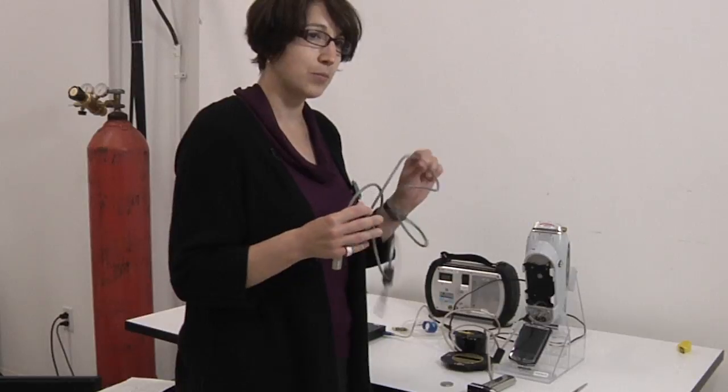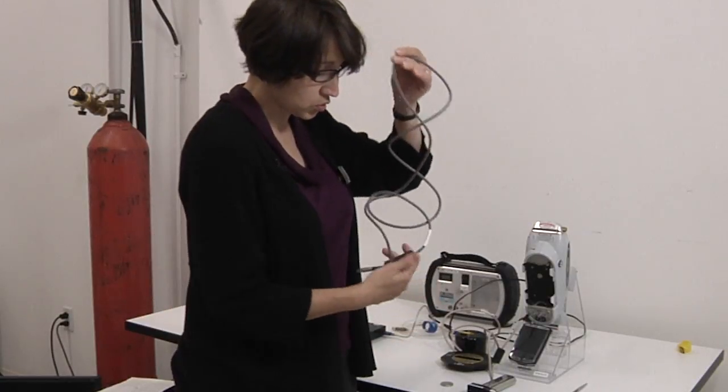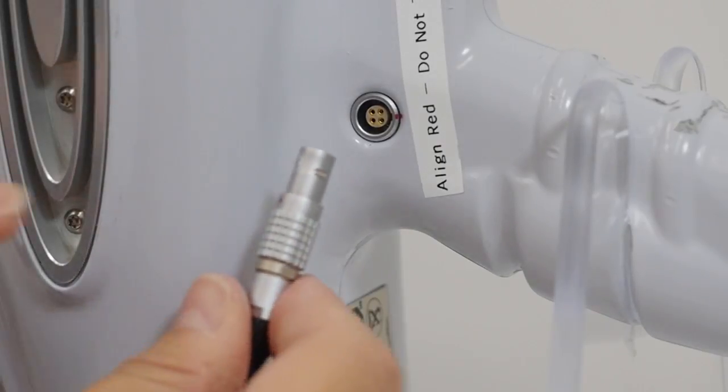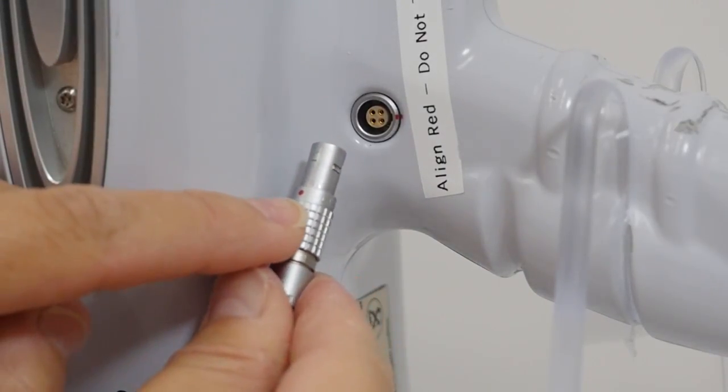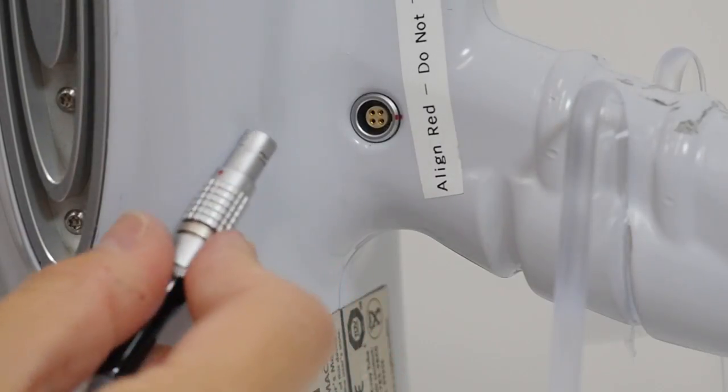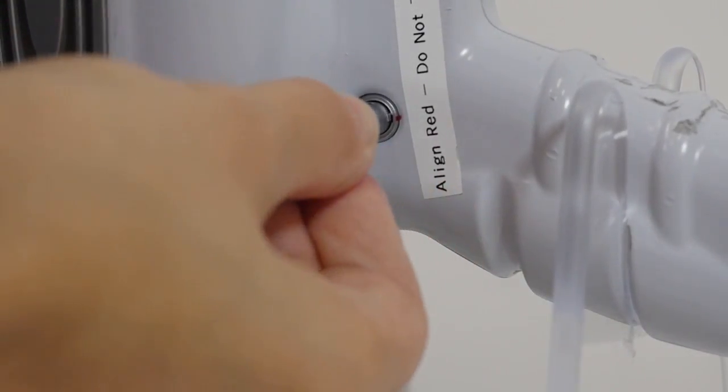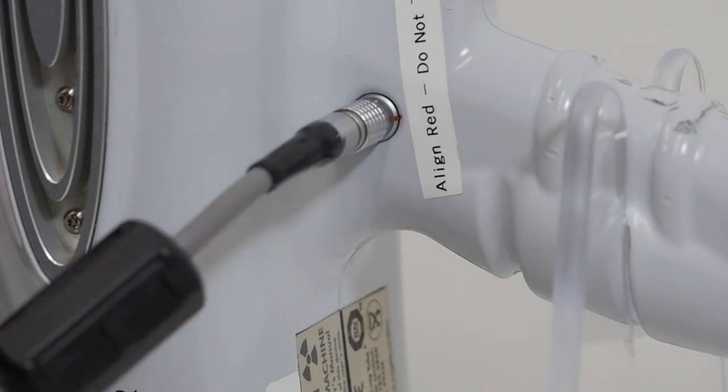We can also attach the cable to allow remote control on and off of the unit. This is also a connector with a red dot on it. And we need to make sure to line it with the red dot on the port. Make sure it's seated securely.